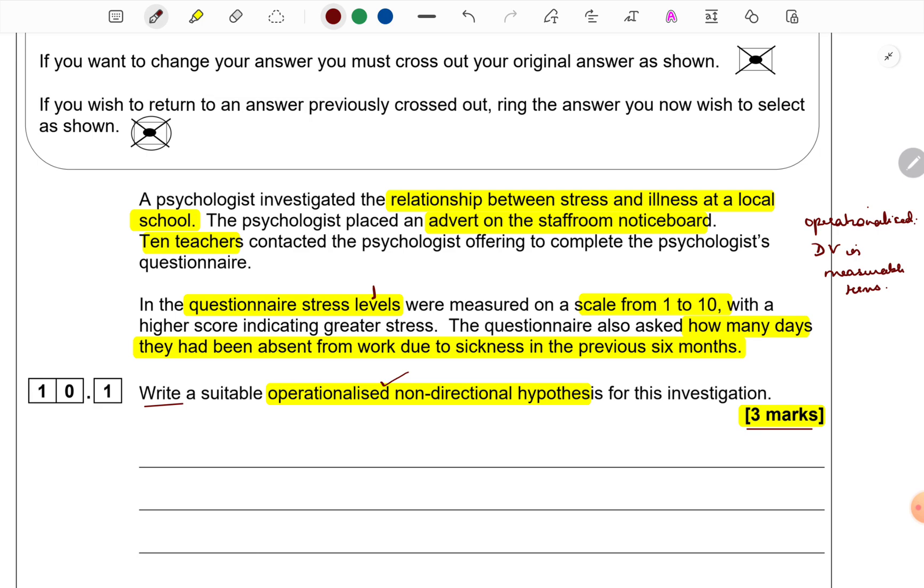Stress levels and days of absence from work. We can call them dependent variables or we can call them co-variables since it is a correlation question. Any which ways that you take it, there are two variables that will have to be specified in measurable terms. So, it should be obvious to you that for each of the variables that you present correctly in operational terms, you will get one mark. So, that accounts for two marks. Next, I have asked you for a non-directional hypothesis.